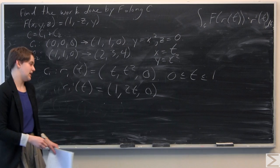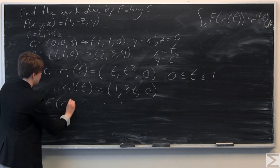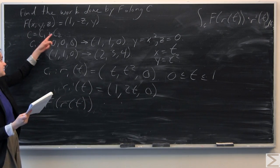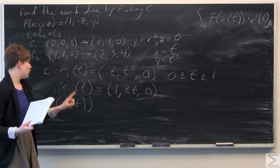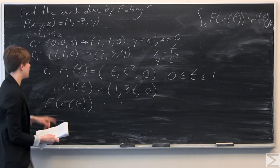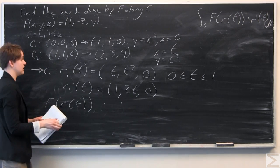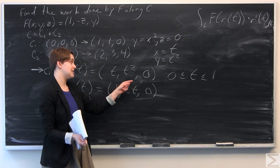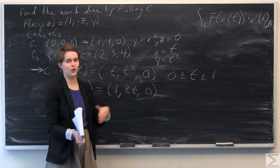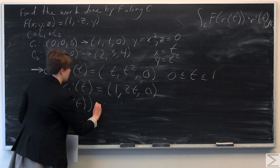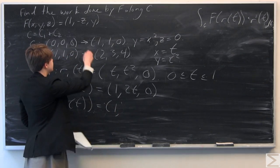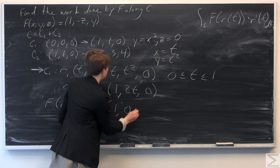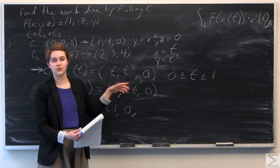Now we find F of R1 of T. Our original function is F(x, y, z) equals (1, negative z, y). Plugging in the parameterization — x equals T, y equals T squared, z equals 0 — the first component is 1, the second is negative z which is 0, and the third is y which is T squared. So F of R1 of T equals (1, 0, T squared).